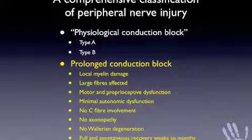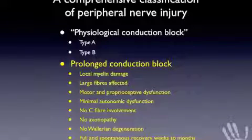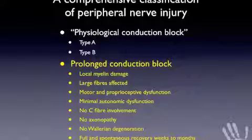Prolonged conduction block is when there is local segmental myelin damage to the nerve. This tends to affect the larger nerve fibres that are myelinated more than other fibres within the nerve, so motor and proprioceptive dysfunction can be seen, together with fast pain response. There is minimal autonomic dysfunction and no C fibre involvement. There is no degenerative axonopathy, and full and spontaneous recovery can occur within weeks to months, so long as the myelin is able to repair itself, which takes between 10 and 12 weeks. This will only occur if the injuring agent is removed. If the injury persists, such as an expanding haematoma or compression from fracture fragments, then this prolonged conduction block may persist, or there may be apoptosis and cell death, resulting in a higher level of nerve injury.